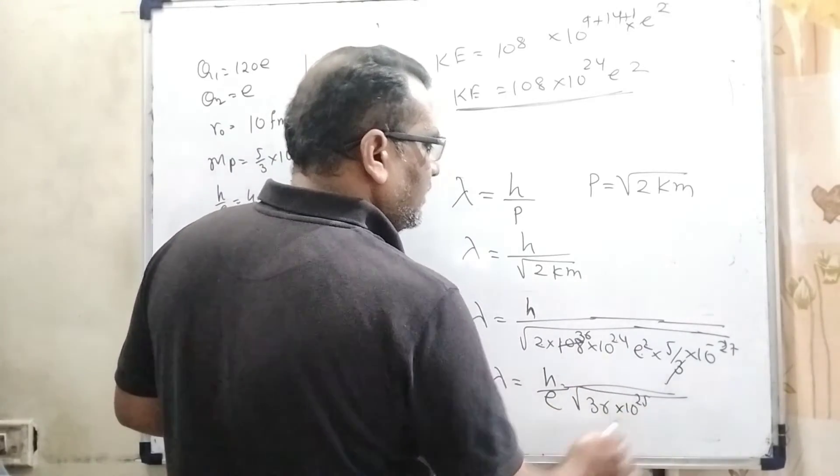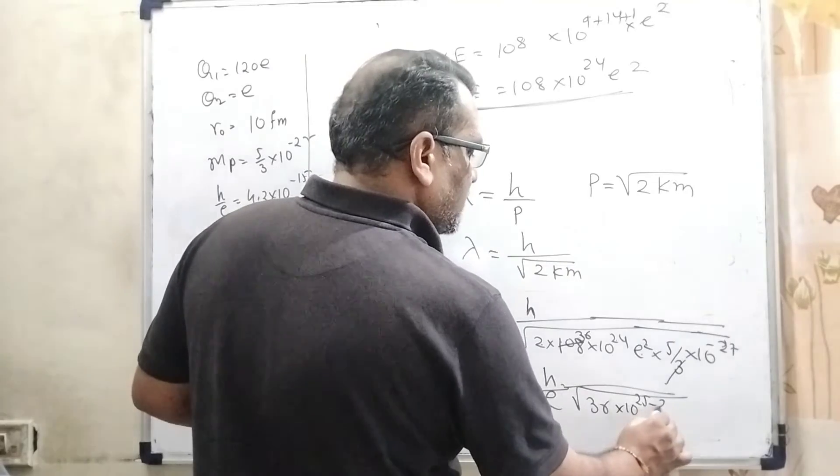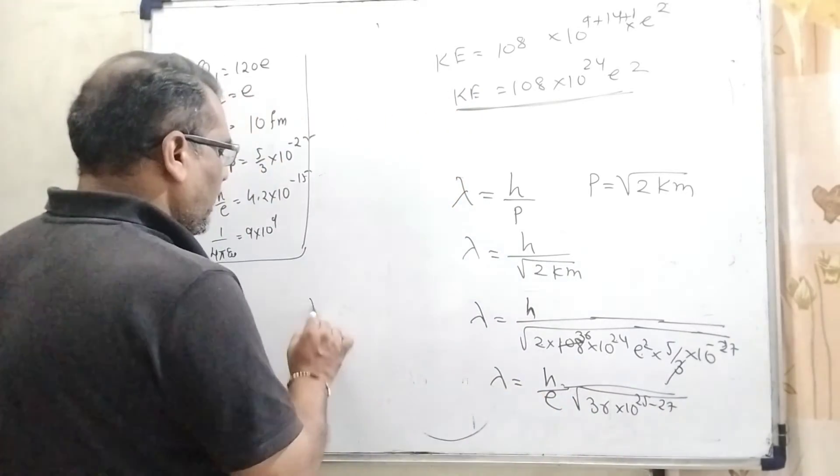This is 24, now it becomes 25. This is -27. h/e is given as 4.2 × 10^-15.